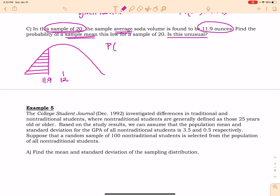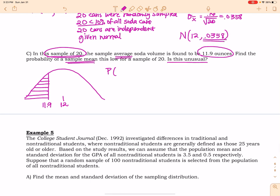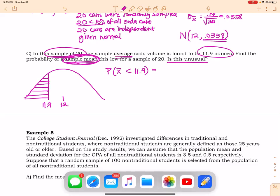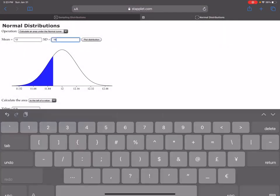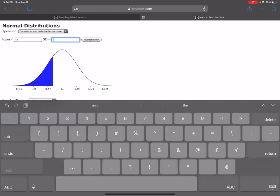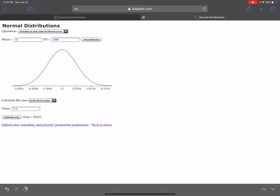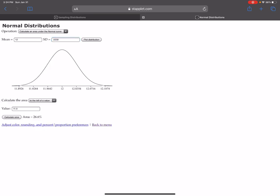So now we're being asked about a sample of 20, how unusual it would be that that average amount would be less than 11.9. And keep in mind, it's for a sample of 20, so this standard deviation is much, much smaller than 0.16. So is 11.9 farther below the mean this time? Yes it is. Okay, so now my notation changes because I want to know about the sample mean. That means X bar. I want the probability that X bar is less than 11.9. So let's go to staplet, and I'm changing my standard deviation to the standard deviation for all sample sizes of 20.